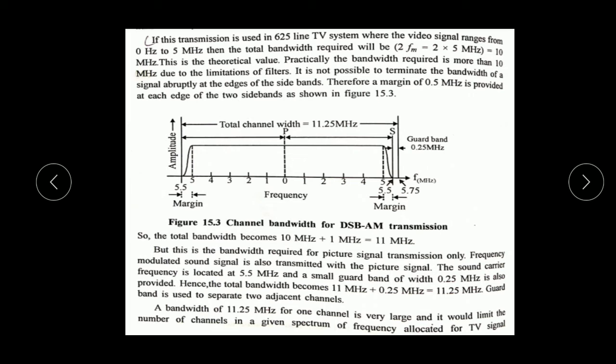But this is the bandwidth required for picture signal transmission only. The frequency modulation signal is also transmitted with the picture signal - the audio signal is also transmitted along with the video signal. The sound carrier frequency is located at 5.5 MHz. A small guard bandwidth of 0.25 MHz is also provided. Hence the total bandwidth becomes 11 + 0.25 = 11.25 MHz. This bandwidth of 11.25 MHz for one channel is very large and it would limit the number of channels in the given spectrum allocated for TV signals.